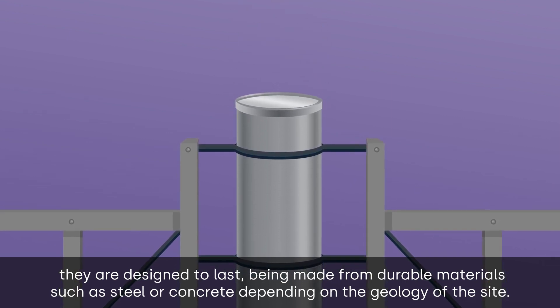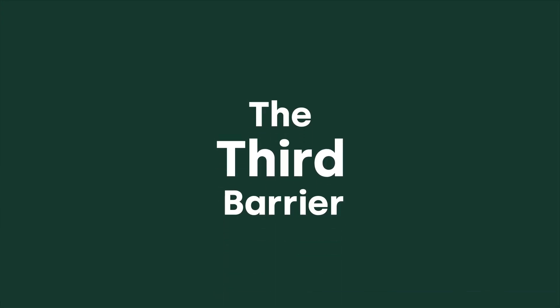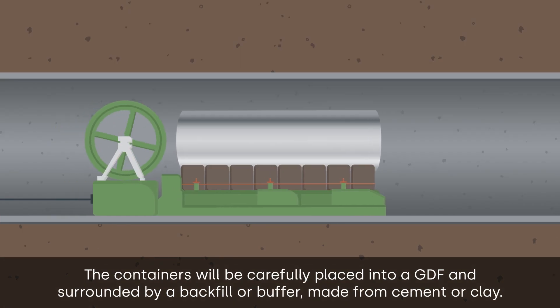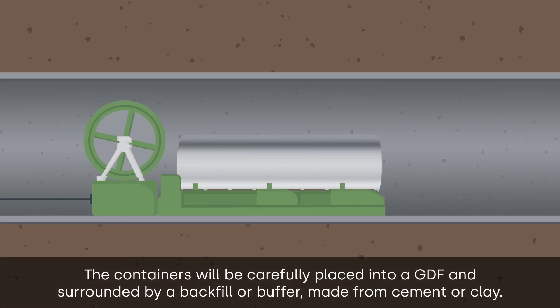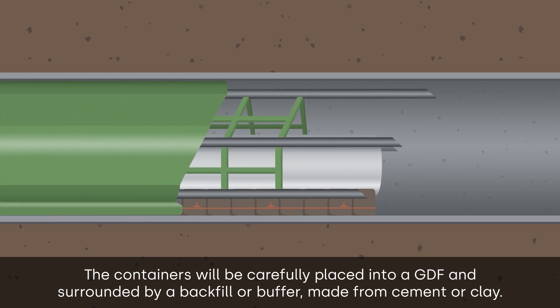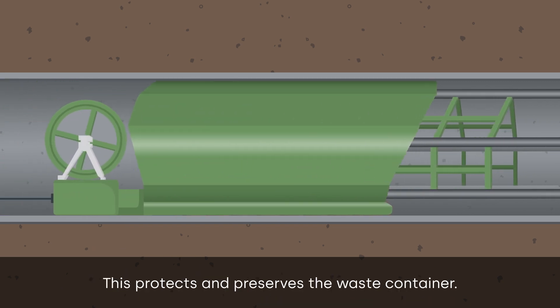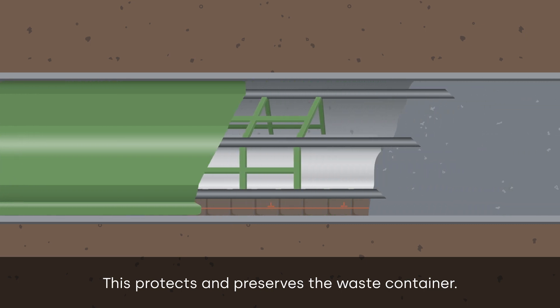The third barrier: the containers will be carefully placed into a GDF and surrounded by a backfill or buffer, made from cement or clay. This protects and preserves the waste container.